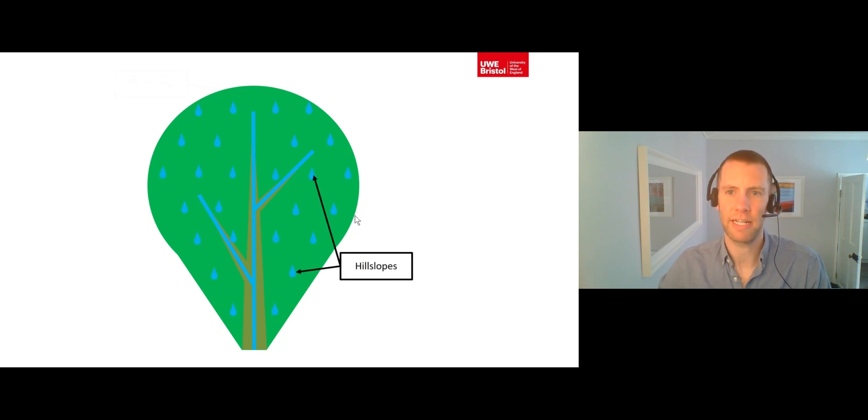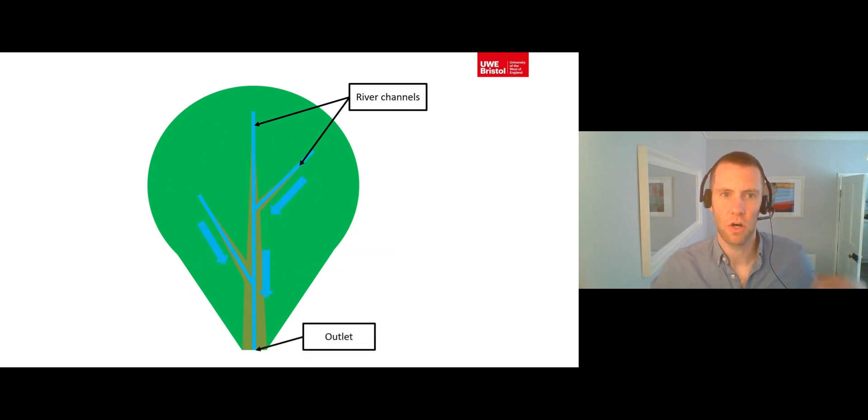Precipitation lands on a drainage basin's hill slopes and then travels down those hill slopes in order to enter river channels. Water flows downstream along those river channels, joining up with the other channels that make up the river channel network before reaching the outlet.